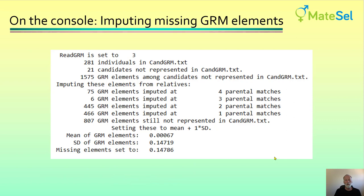On the console, if imputation has happened — it happens automatically, you don't have to ask for it — you get output like this: the number of individuals in your GRM, the number of candidates not represented in it, the total number of elements that are missing, and a report about how many elements have been imputed at the four different levels, with the best quality information coming when you have four parental matches. For elements still not represented and that cannot be imputed, these are set to the mean GRM off-diagonal value plus one standard deviation. For this pig dataset, that was the mean plus one standard deviation of the GRM elements.